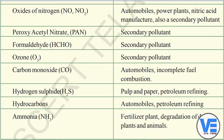Oxides of nitrogen — that is nitrous oxide and nitrogen dioxide — are released from automobiles, power plants, and nitric acid manufacture. They also act as secondary pollutants. Primary pollutants react with each other to form new pollutants called secondary pollutants. Other secondary pollutants include peroxyacetyl nitrate (PAN), formaldehyde (HCHO), and ozone (O3).